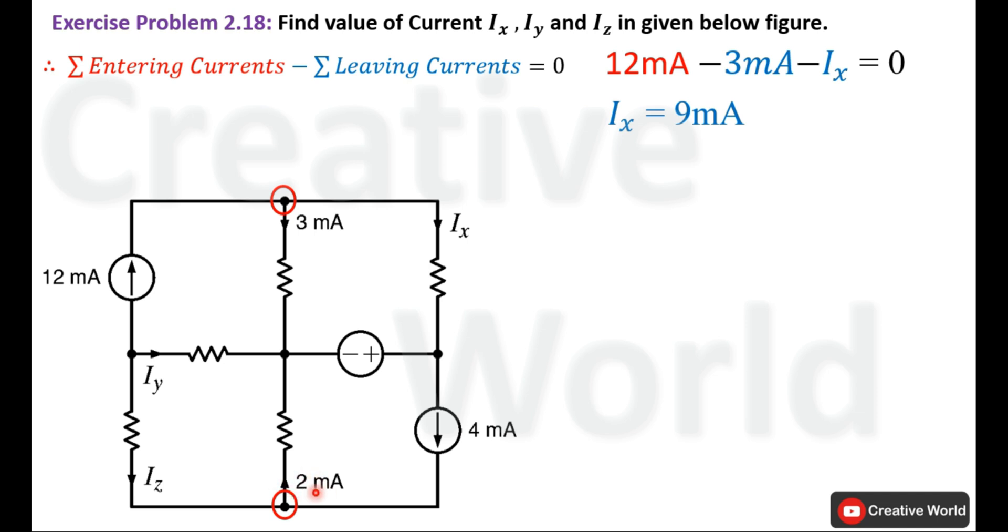So write its Kirchhoff's Current Law equation. 4 mA and Iz are entering currents on this node, while 2 mA current is leaving from this node. Subtract 2 mA from 4 mA and place this minus 2 mA on the other hand side of equal to calculate the value of Iz, that is 2 mA.